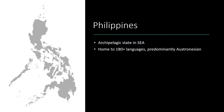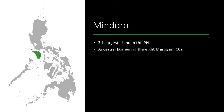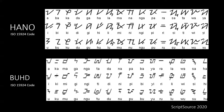In this talk, I'll focus on the island of Mindoro, the seventh largest island in the Philippines, and also the ancestral domain of eight different Mangyan indigenous cultural communities. Mangyan is an umbrella term to refer to eight different ethnolinguistic groups or indigenous cultural communities on the island of Mindoro. We will focus on the southern Mangyan groups, which are Hanunuo and Buhid.